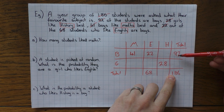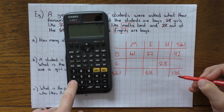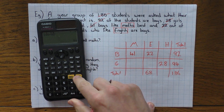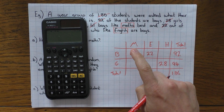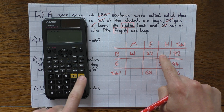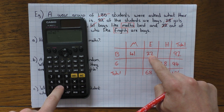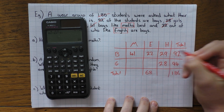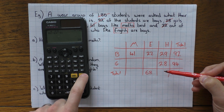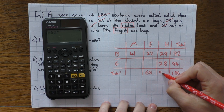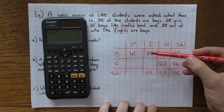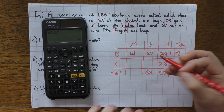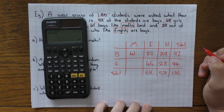Now I fill in the rest. The total number of girls is 186 minus 92, which is 94. I can work out how many boys like history: 92 minus 22 minus 41 leaves 29 boys who like history. The history total is 29 plus 28, which is 57. And girls who like English: 68 minus 22 equals 46.